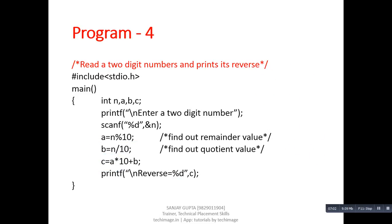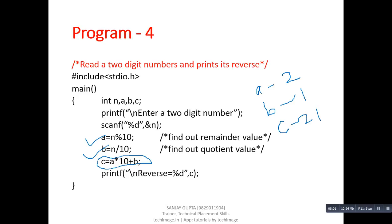Program number four: read a two-digit number and print its reverse. Comparing this with the previous program — in the previous program we added the two individual digits, but now we perform the reverse operation. The first two statements are the same as the previous program, so A becomes 2 and B becomes 1. Applying these two values in the reverse formula gives 21, which is the reverse of 12. Using this program we can reverse any two-digit number easily, and through the printf statement we display the result.